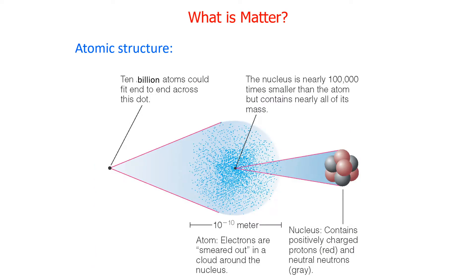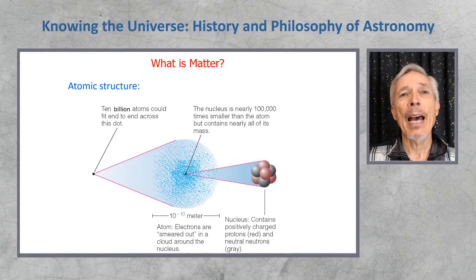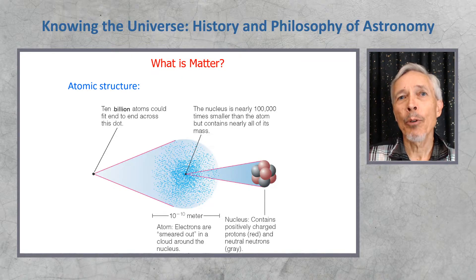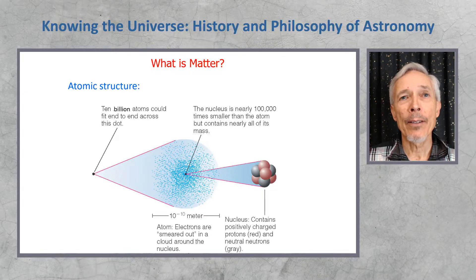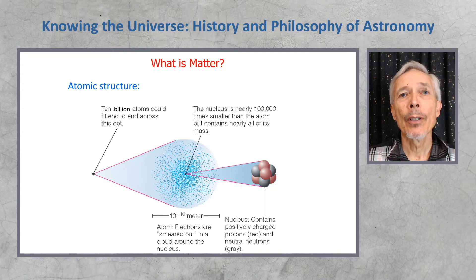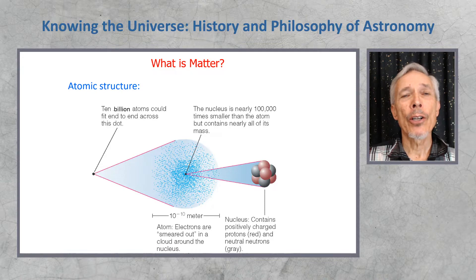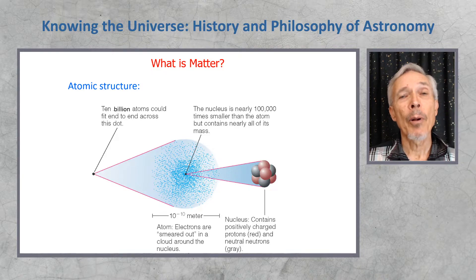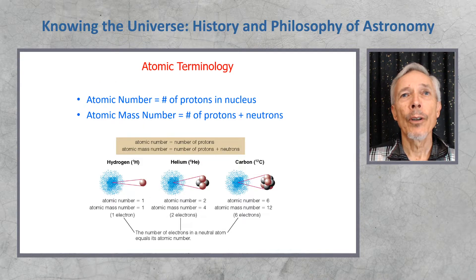In broad form, what is normal matter? Well, we have atomic structure such that 10 billion atoms could fit across a dot on a printed page. The nucleus is 100,000 times smaller than the individual atom, but it contains nearly all of its mass. This was work that was realized by Rutherford, working at the Cavendish lab in Cambridge. The nucleus is surrounded by electrons, which are negatively charged, and they are smeared out in a cloud that surrounds the nucleus. The nucleus contains the positively charged protons and the neutral neutrons, and that's the constituents of the atom.